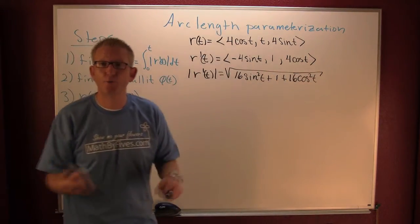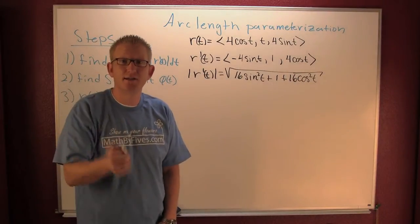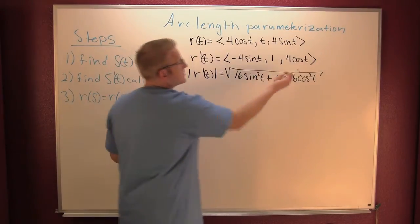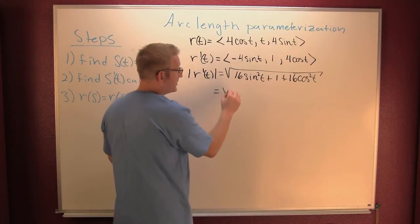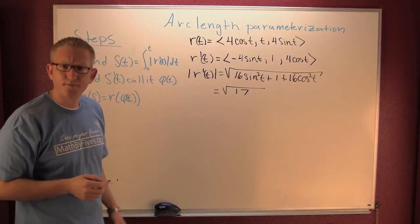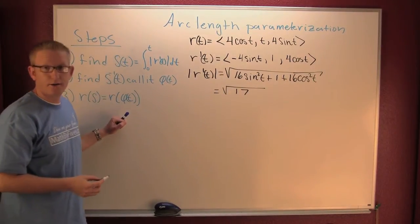Yeah, so now that I got that, I can reorder terms, factor out of 16. I see I got 16 times sine squared plus cosine squared, so Pythagorean, yeah. So then that's one and this all turns out to be the square root of 17.